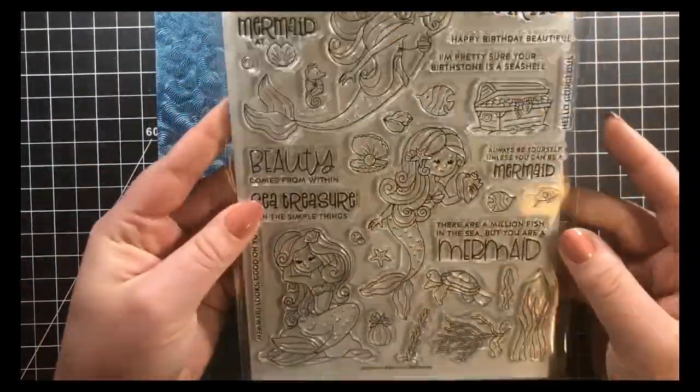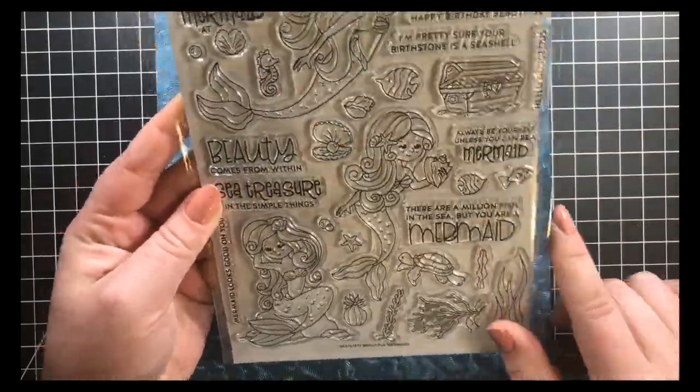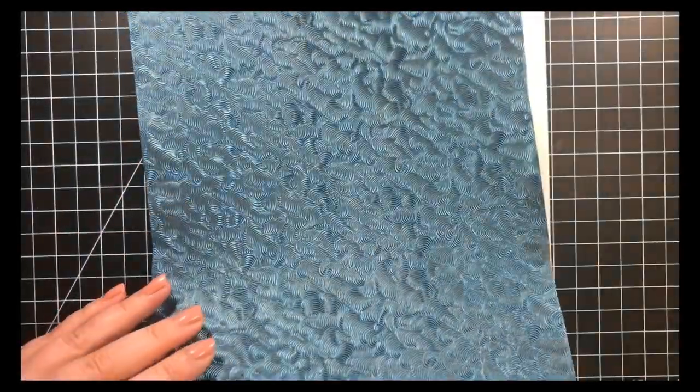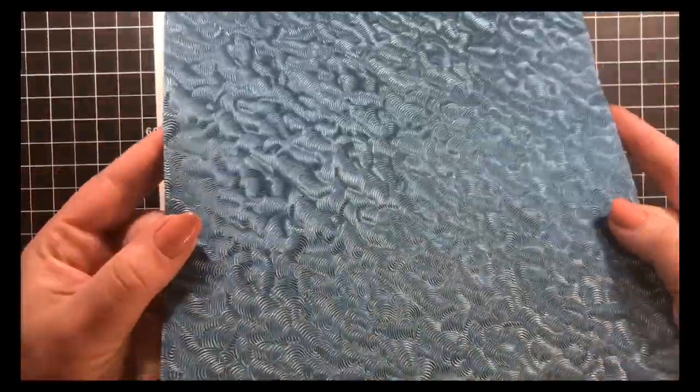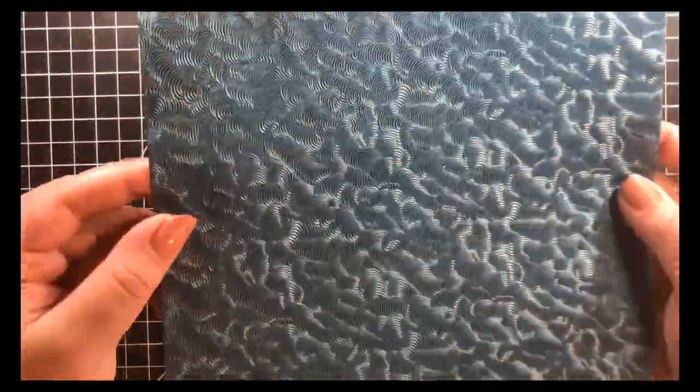This is called Beautiful Mermaids and it's gorgeous, perfect for scene building. We have a piece of the Deep Sea Dive Luxury Embossed Paper by Tonic and a piece of Neenah Solar White.